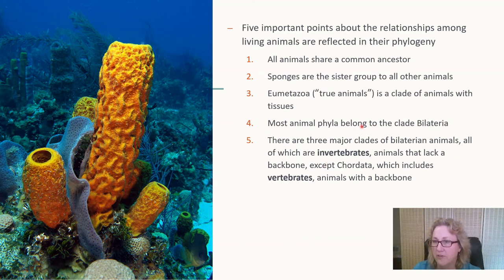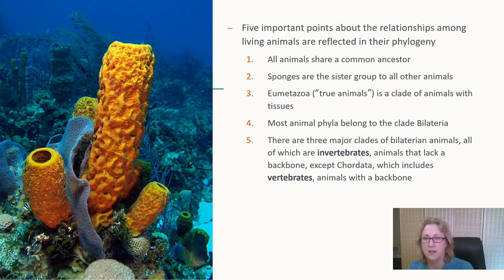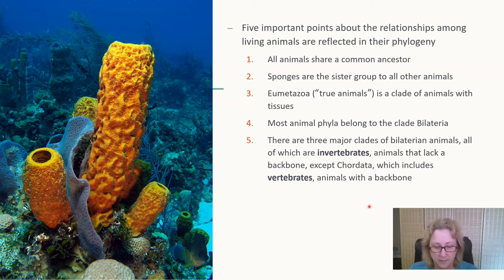Most animal phyla are bilaterally symmetric. We'll spend time talking about invertebrates in the next chapter and chordates and vertebrates in the chapter after that. An invertebrate is any animal that does not have a bony backbone — all vertebrates are in phylum Chordata. Most animals are not vertebrates, even though when people say 'animal,' they usually picture a vertebrate. An animal could be a sponge, a bee, or many other things.